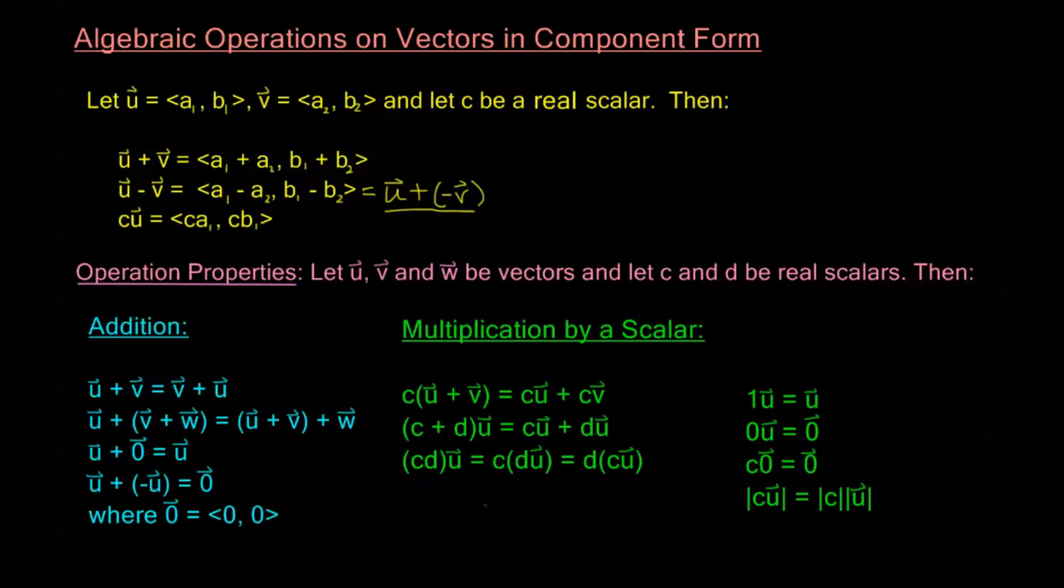And this scalar multiplication is associative and commutative. So I can multiply cd first if I have this product and then multiply that to u. I can multiply d to u first and then multiply c to the result, or I can multiply c to u first and then multiply d to the result. And we have a couple of other scalar properties here. The scalar 1 multiplied by any vector u is just the vector u. The scalar, in other words the real number zero, multiplied by any vector u gives us the zero vector. Any scalar c multiplied by the zero vector gives us the zero vector. And the magnitude of the vector cu is equal to the absolute value of c multiplied to the magnitude of u.